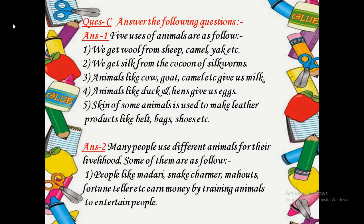Coming on question C — answer the following questions. Question 1: What are the various uses of animals? Answer: Five uses of animals are: (1) We get wool from sheep, camel, yak, etc. (2) We get silk from silkworms. (3) Animals like cow, goat, camel, etc. give us milk. (4) Animals like duck and hen give us eggs. (5) Skin of some animals is used to make leather products like belts, bags, shoes, etc.